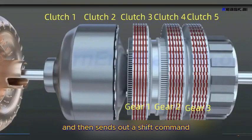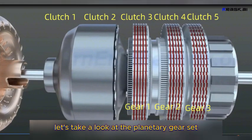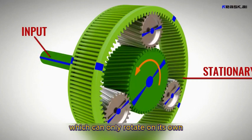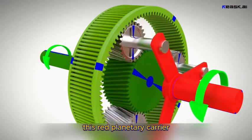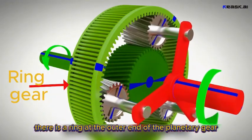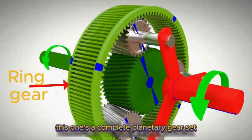At the center is the sunwheel, which can only rotate on its own. Outside, there are three planetary gears which rotate around the sunwheel. This red planetary carrier holds the three planetary gears in place so that they are always at the same pitch. There is a ring at the outer end of the planetary gear. This forms a complete planetary gear set.